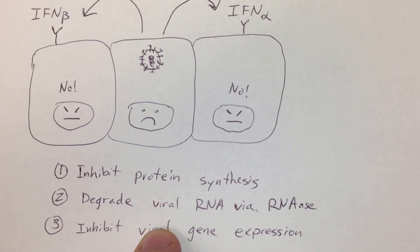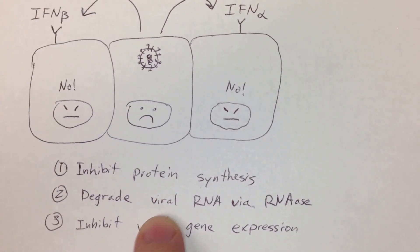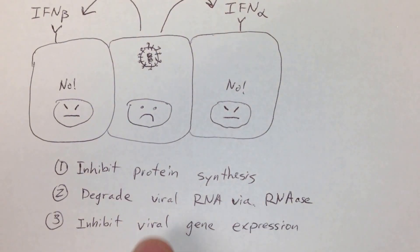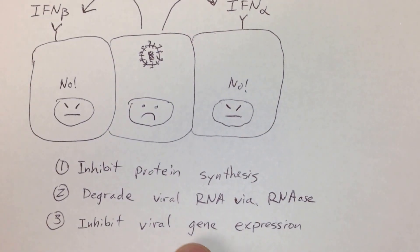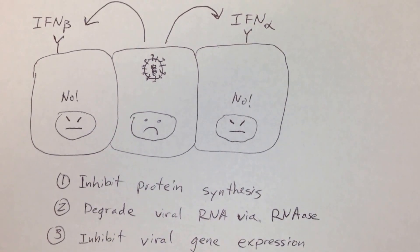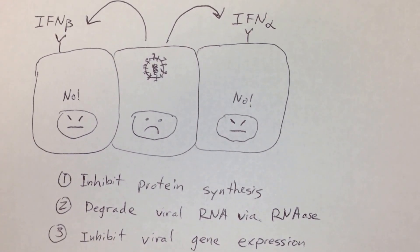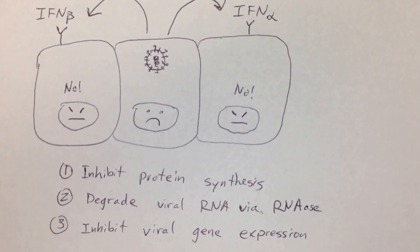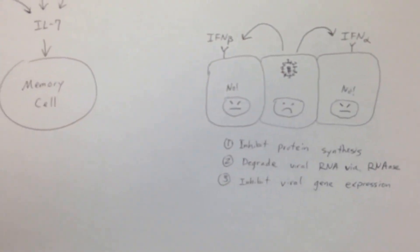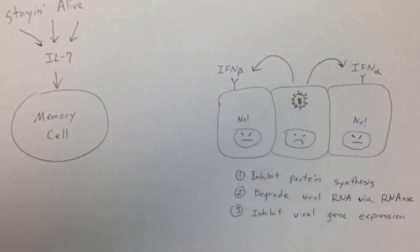So if they pick those up, they're going to say no to the viruses. And what are they going to do? They're going to inhibit protein synthesis, they're going to degrade viral RNA in the cell via RNAse, and they're going to inhibit viral gene expression. So they're just going to do their best to stop up all the virus's plans for invading and doing bad things. So hopefully you learned some new cytokines and had some fun. Have a good day.